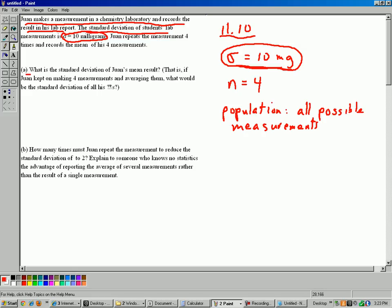Part A: what is the standard deviation of Juan's mean result? That is, if Juan kept on making four measurements and averaging them, what would be the standard deviation of all his x-bars? That should be an x-bar there. That's a typo there.